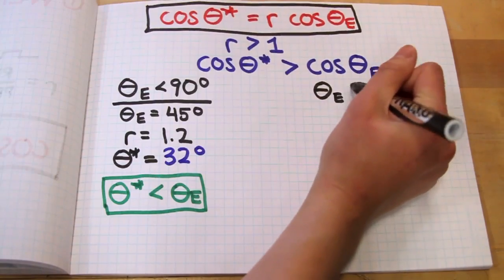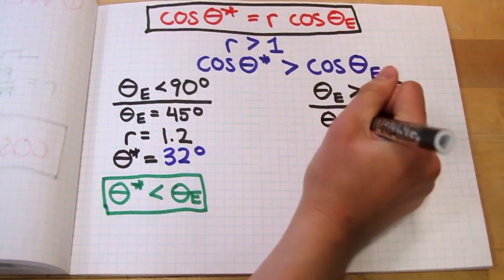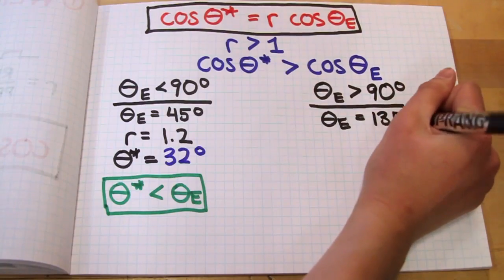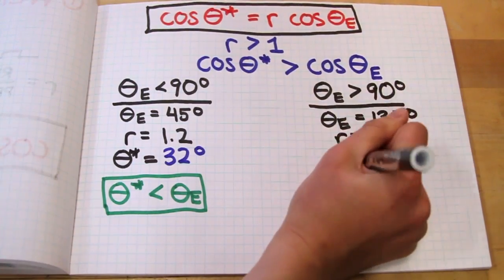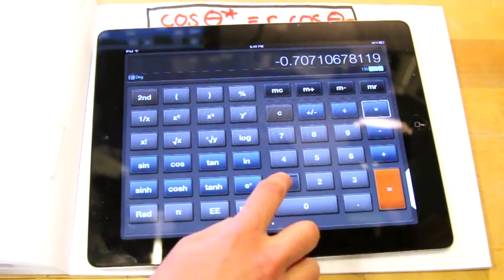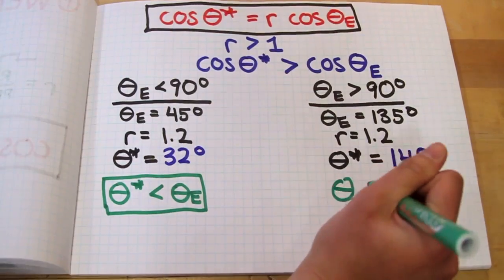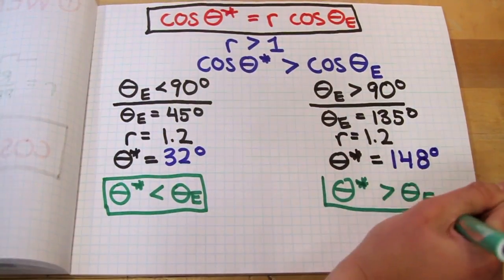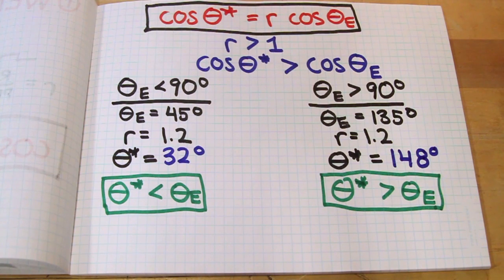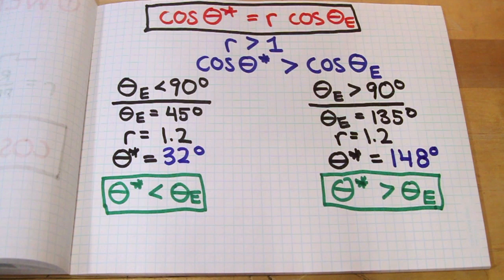Now let's look at what happens when theta_e is greater than 90 degrees. If we set theta_e to 135 degrees and r equal to 1.2, we calculate that theta* is equal to 148 degrees — theta* is greater than theta_e. So when the surface is hydrophilic, theta* is smaller than theta_e, and when the surface is hydrophobic, theta* is bigger than theta_e. This equation shows that roughness makes a hydrophobic surface even more hydrophobic, and hydrophilic surfaces even more hydrophilic.